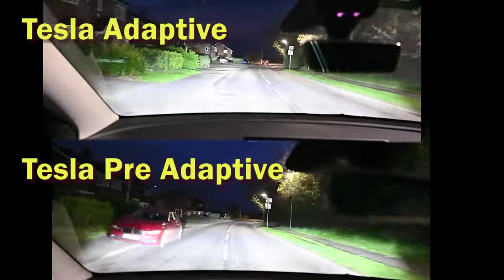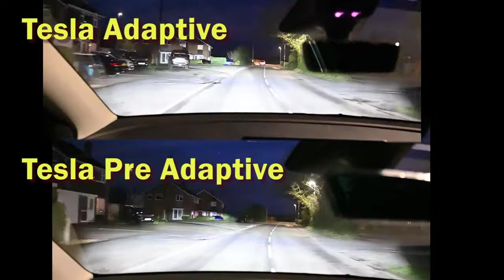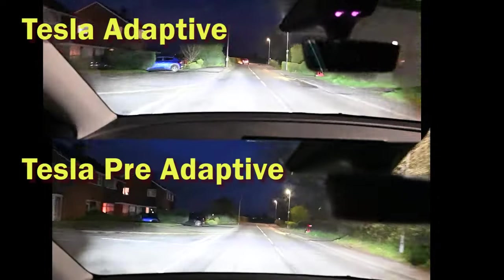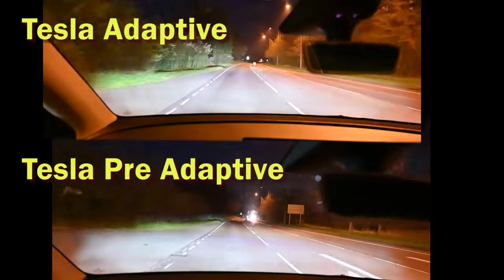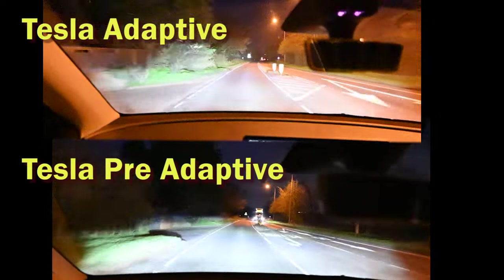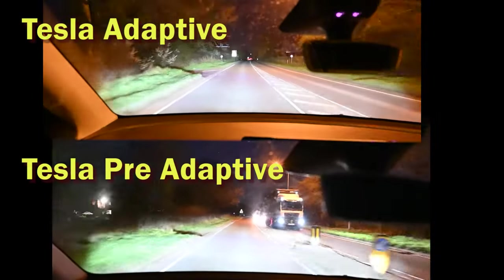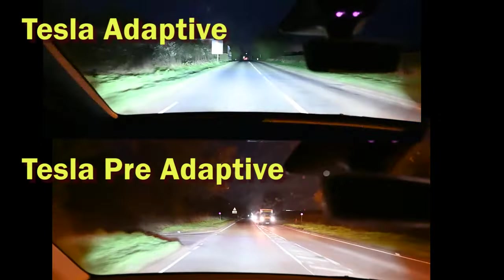Again, and I guess it's not really surprising, there isn't an awful lot of difference between the adaptive and the pre-adaptive headlights when you're just looking at when full beam can be full beam or high beam can be high beam. Okay, we now switch to a faster road with more oncoming traffic.